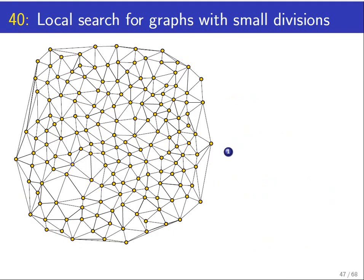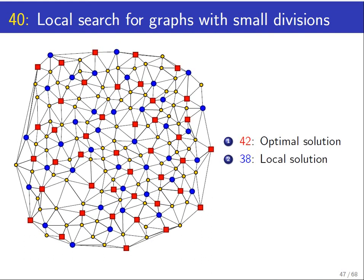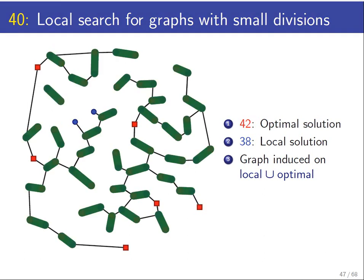Let's see why these divisions help us in arguing about the local search algorithm. Consider the optimal solution and the local optimum solution, and look at the graph that they induce. The intuition is that this graph is going to be very sparse. In particular, it's going to fall into our classes of graphs that have small separators.